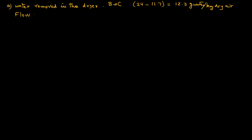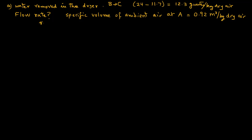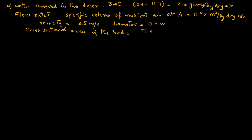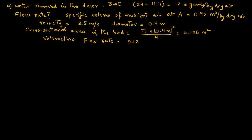Now we want to determine the mass flow rate. From the psychrometric chart we have the specific volume of ambient air at A as 0.92 cubic meters per kilogram dry air. The velocity of the air is 3.5 meters per second and the diameter of the bed is 0.4 meters. The cross-sectional area of the bed will be π d² / 4, or π × (0.4)² / 4, which equals 0.126 square meters. The volumetric flow rate will be the velocity multiplied by the cross-sectional area: 0.126 × 3.5 = 0.44 cubic meters per second.